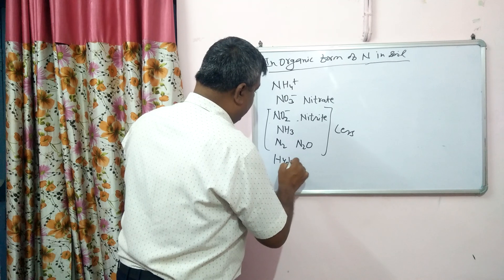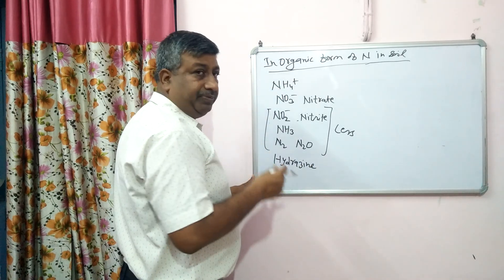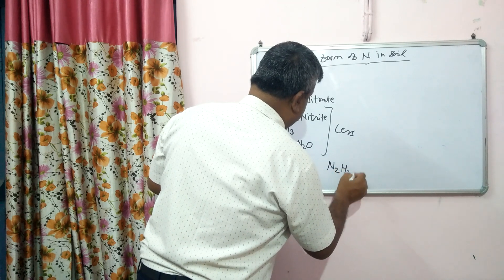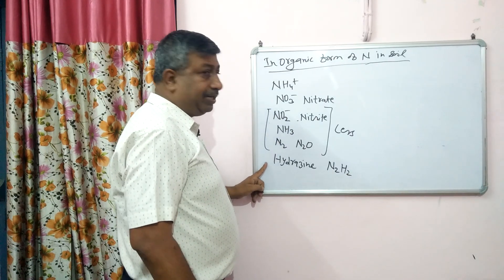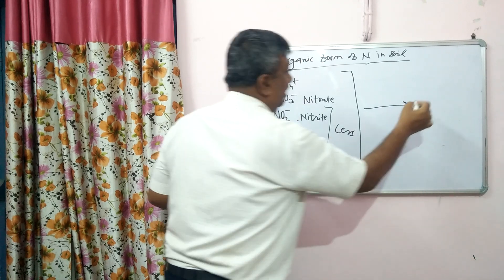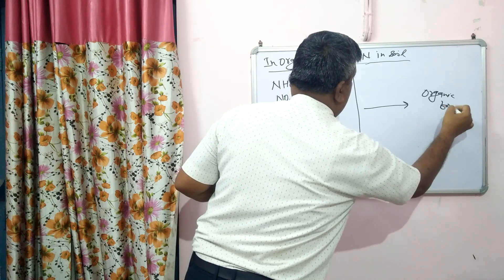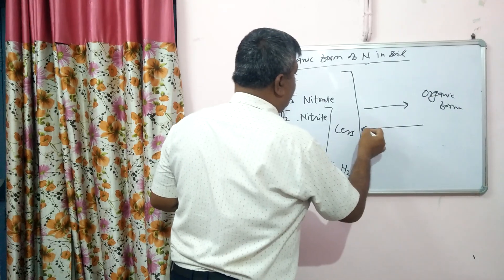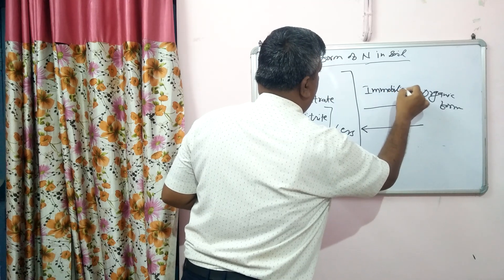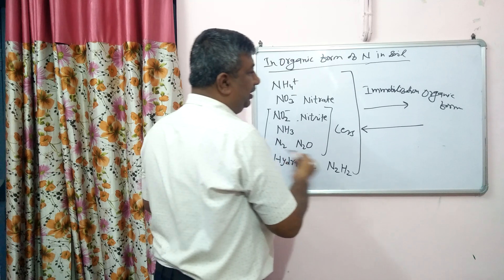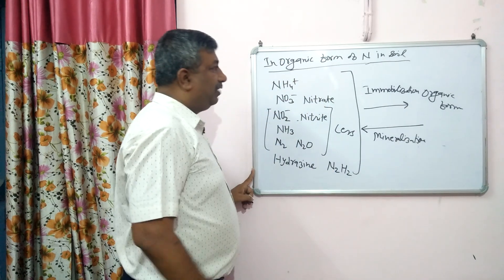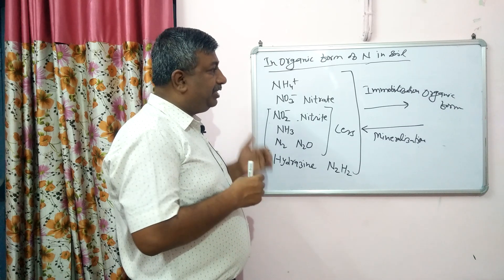Hydrazine (N₂H₂) is synthesized by microbes that have the capacity to fix nitrogen, but this amount is very less. When inorganic form is converted into organic form, this process is called immobilization. When organic form is converted to inorganic form, it is called mineralization. This interchange between organic and inorganic nitrogen forms through immobilization and mineralization is very important.